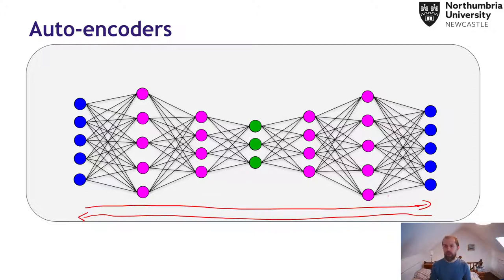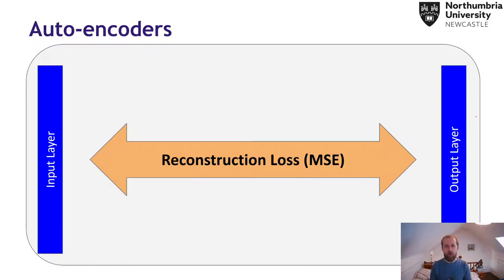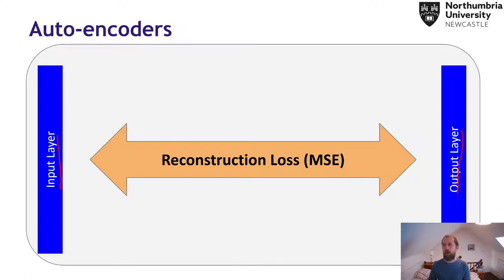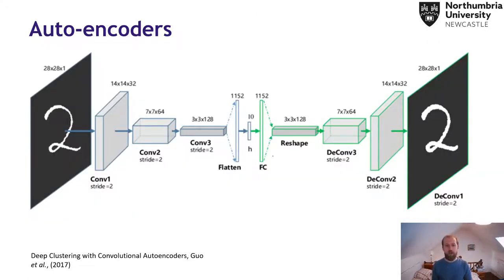We use a different loss function than what we've seen before, because we're not doing classification here. Our output is the reconstructed image, so we're going to use what's called a reconstruction loss, or mean squared error. The idea is we're just trying to get the output layer to look identical to the input layer — the more different the output is from the input, the higher the loss. I'm going to show you an example of how this looks on the MNIST dataset.